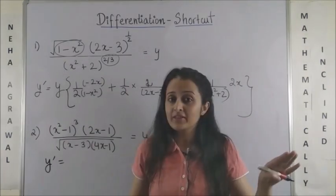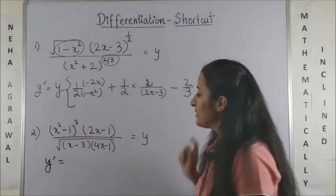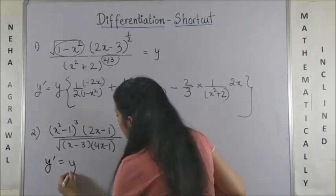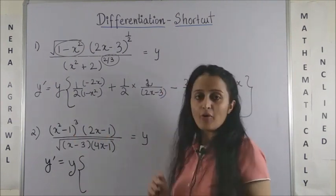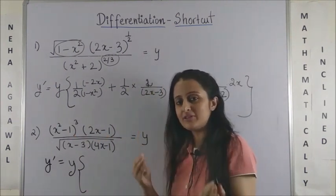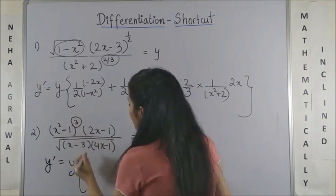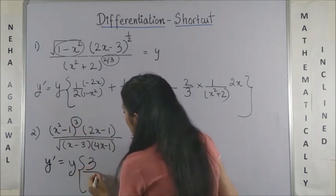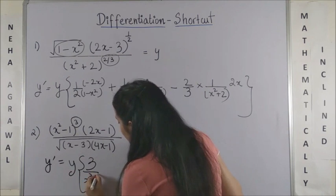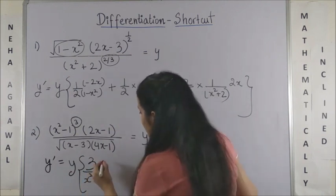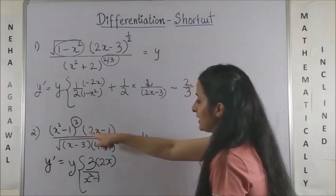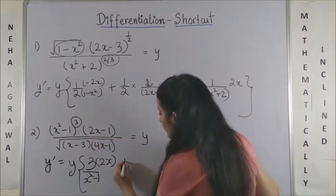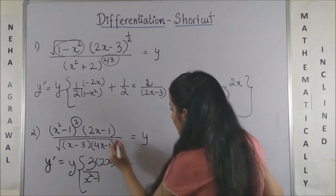Writing on the seesaw one more time, if I write my y', first thing is I copy my y as it is inside. These two are on the top, so they would have the plus sign. Looking at the power, I copy it down as it is: 1/(x²-1), and then for this x² you get 2x as a derivative.